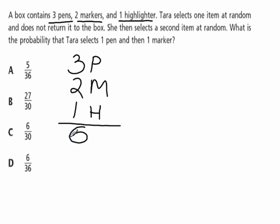Terra selects one item at random and does not return it to the box. Does not return it means that it's going to be two dependent events. Outcome of the second event will depend on the outcome of the first one. Then she selects a second item at random.